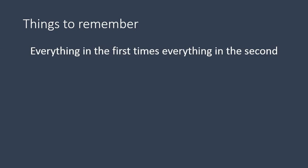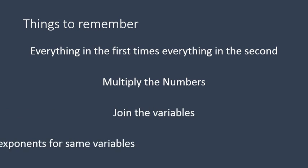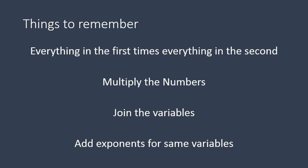And that is our lesson. Just a couple of things to remember: everything in the first binomial must be multiplied times everything in the second binomial. Make sure to multiply the numbers, join the variables, and add the exponents if the variables are the same. Hope that lesson was helpful for you, Curious Learners. Have a wonderful day!